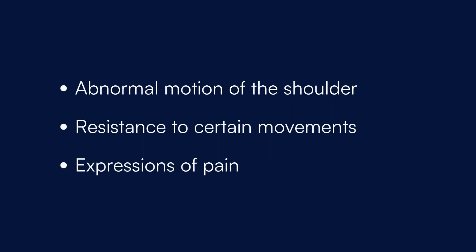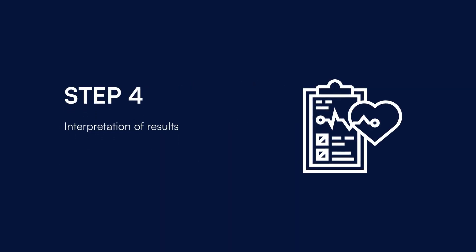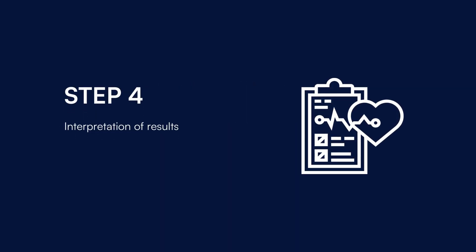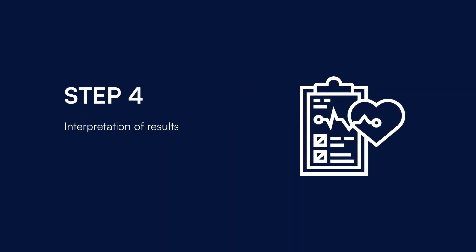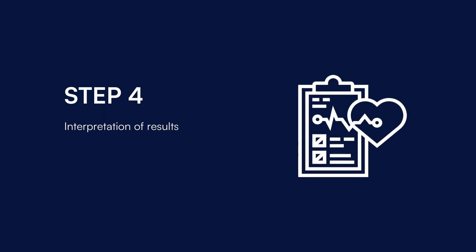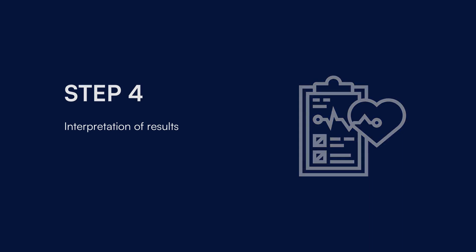The final step involves interpreting the results. The healthcare professional evaluates the documented observations, determining whether they indicate shoulder subluxation. Common positive signs include visible abnormal shoulder movement and patient apprehension or discomfort during the test.